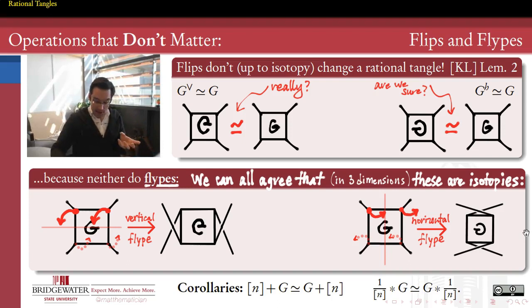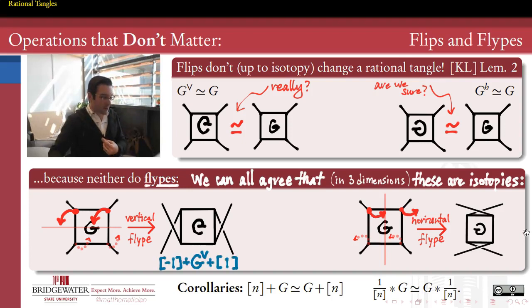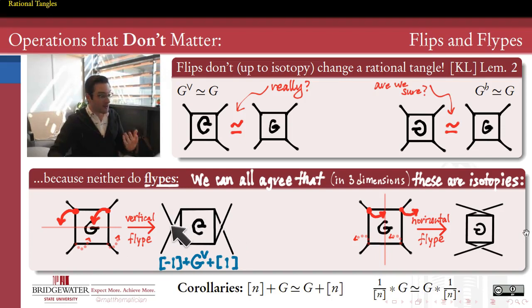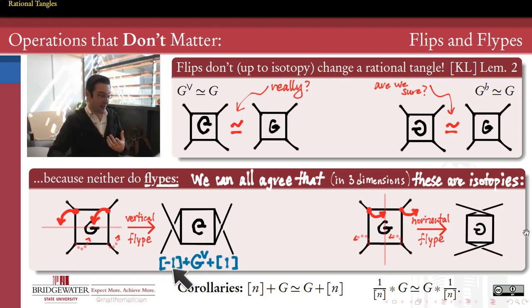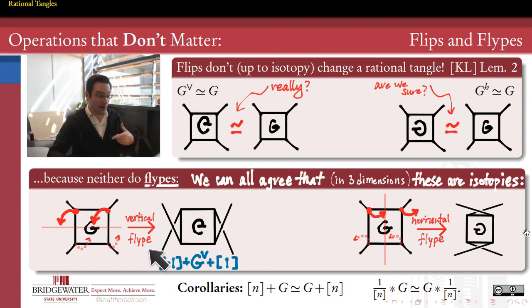So the tangle type should remain the same when we apply either of these types of flipes. And it turns out flipes are the key ingredient in proving that flips — horizontal flips and vertical flips — of a rational tangle don't change the isotopy type of that tangle either. Each type of flipe can also be represented by a combination of tangle arithmetic. The vertical flipe takes my tangle, flips it upside down into the vertical flip of g, then adds a positive one crossing on the right and a negative one crossing on the left. So we can represent a vertical flipe as negative one added to the vertical flip of g added to positive one. Notice that the new crossing added on the right and the new crossing added on the left are equal and opposite, which gives us reassurance that the flipe isn't actually changing the overall crossings.